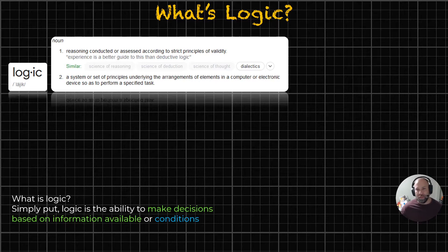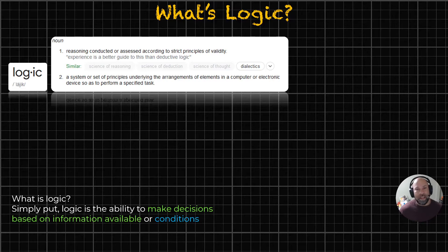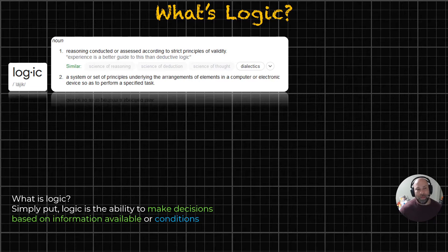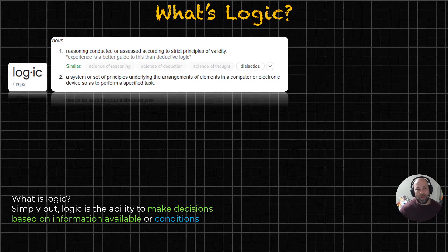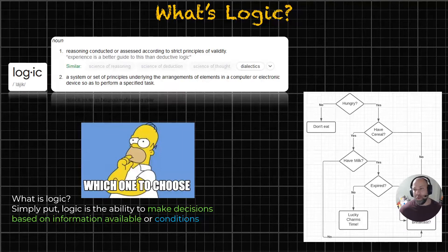What I want you to know, and what should be assessed on, is you should know that logic is the ability to make decisions based on information available or conditions. That's a more simplified, boiled down version. We're going to be trying to do decision making based on what we have available in variables or whatever the parameters of the running program is right now.